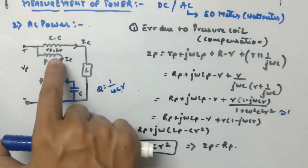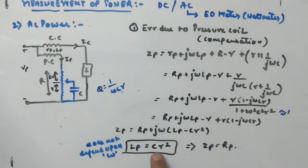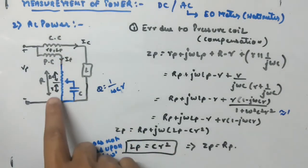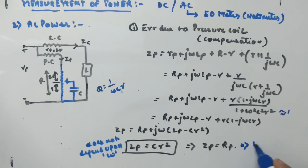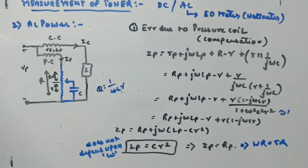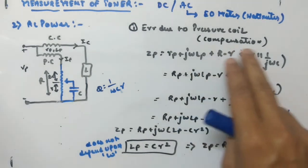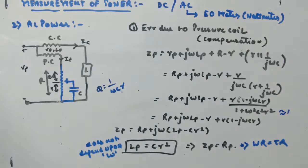So the compensation condition is: Lp = Cr², where Lp is the inductance of the pressure coil, C is the capacitance, and r is the small resistance used. If this condition is satisfied, Zp equals Rp, which means the wattmeter reading equals the true reading. Importantly, this condition does not depend on frequency omega, so it can be used for any frequency. This is how you compensate the effect of pressure coil inductance.